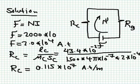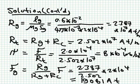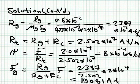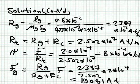For the air gap reluctance: its length is 0.6 × 10^−2 meters; its permeability is μ_0 = 4π × 10^−7; its cross-section area is 2 × 10^−4 meters squared. Simplifying gives a much bigger number: 2.387 × 10^7 ampere-turns per meter. The total reluctance is 2.387 + 0.115 = 2.502 × 10^7 ampere-turns per meter, showing the air gap represents much more resistance to flux flow.